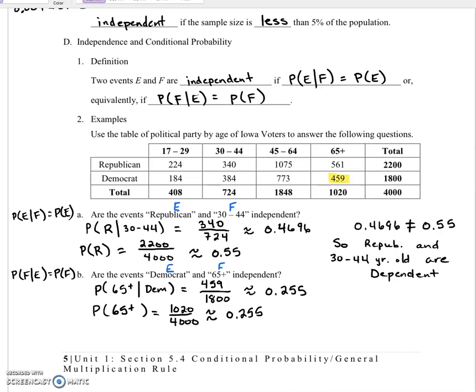So this time, our two probabilities were equal. So that means that being age 65 or older and being a Democrat are independent.